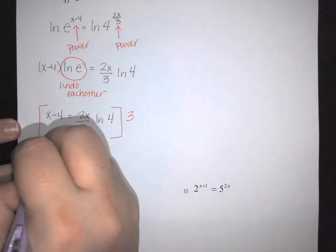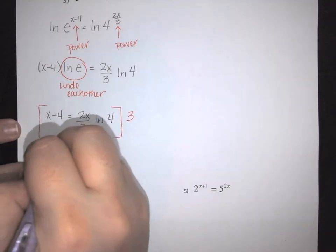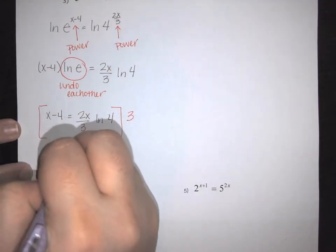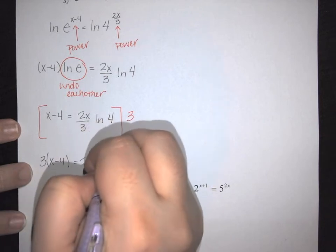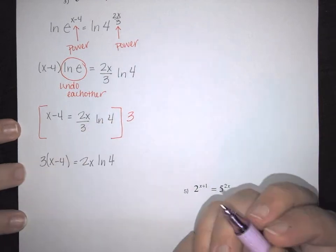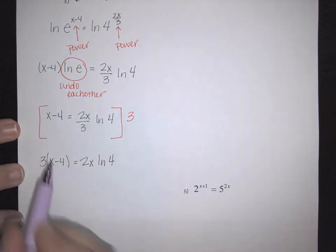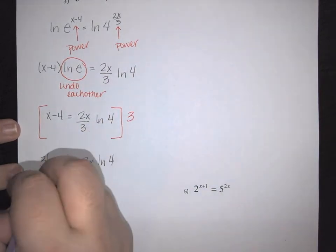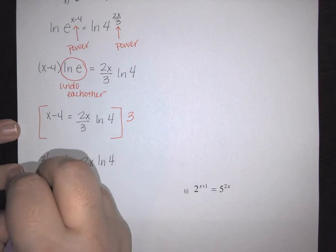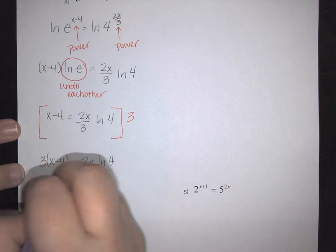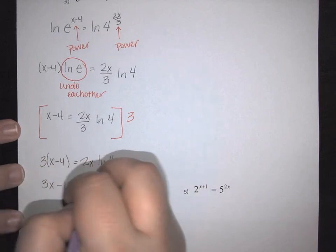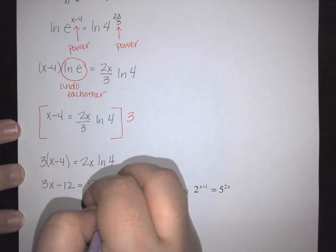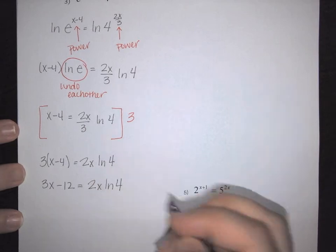This gives 3 times (x minus 4) equal to 2x times natural log of 4. Distributing the 3 gives 3x minus 12 equals 2x natural log of 4.